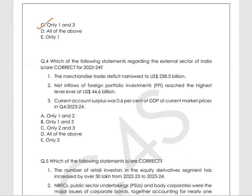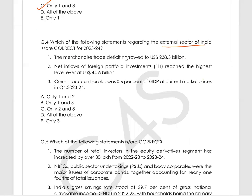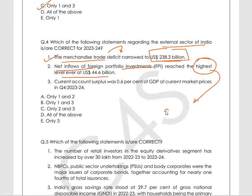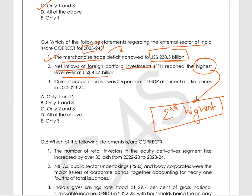Question 4 is regarding the external sector of India. Statement 1 — merchandise trade deficit narrowed to $238.3 billion — correct. Statement 2 — net inflows of FPI reached the highest level ever at US$44.6 billion — wrong, because it is the second highest, not the highest. Statement 3 — current account surplus was 0.6% of GDP at current market prices — correct. Therefore, statements 1 and 3 are correct.